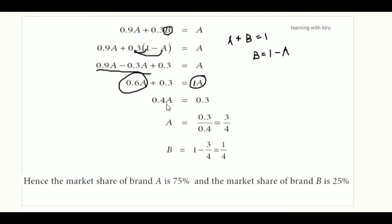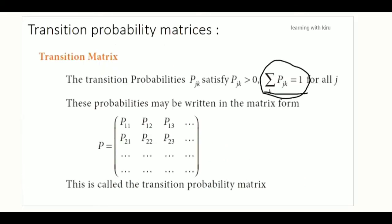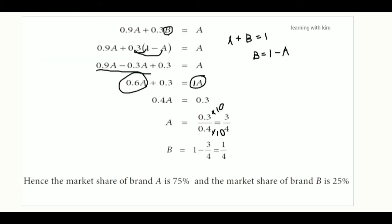Then A equals 0.3 divided by 0.4. For the decimal, we replace top and bottom by 10 to get fractions. Substituting A as 3 by 4: 4 minus 3 equals 1 by 4. So B equals 1 by 4. Justifying: A equals 3 by 4 and B equals 1 by 4. Brand A holds 75% of the market share at equilibrium.